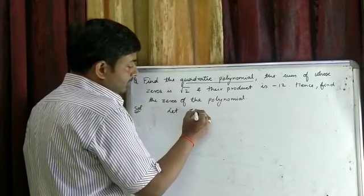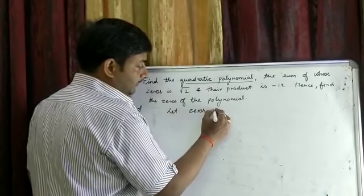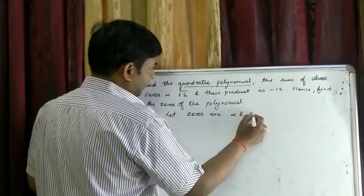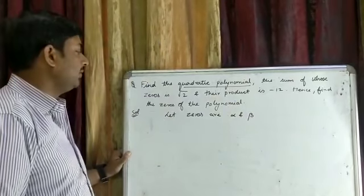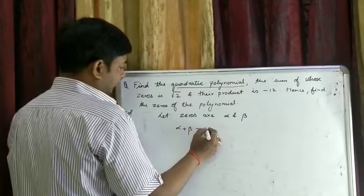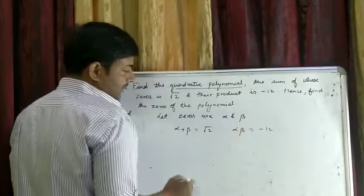Let the zeros be alpha and beta. Sum of zeros is root 2, product of zeros is minus 12.